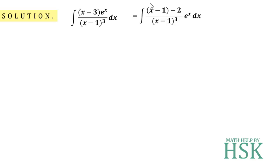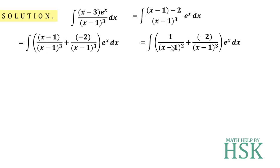Next, I am going to divide this numerator by x minus 1 whole cube, taking x minus 1 as one term and minus 2 as the other term. This will be equal to 1 upon x minus 1 whole square plus minus 2 upon x minus 1 whole cube into e to the power of x dx.